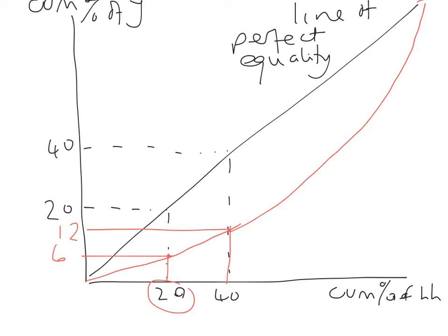That is known as the Lorenz curve, named after Max Lorenz. The more that the Lorenz curve bows away from the line of perfect equality, the more unequal the percentage of income or wealth is distributed amongst the population.